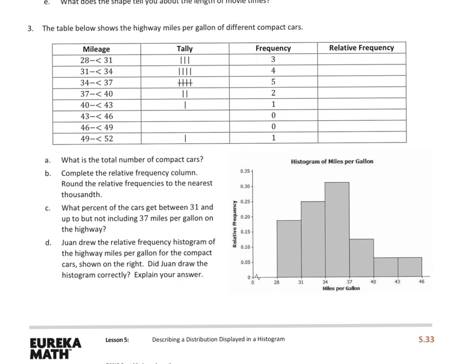So we're going to take a look down at three to get you started because D and E have to do with your histogram. So three says the table below shows the highway miles per gallon of different compact cars. What is the total number of compact cars? Well, we have to figure out first by adding up either my frequency or my tallies. So I have 7, 12, 14, 15, 16. So there are 16 cars that we were looking at.